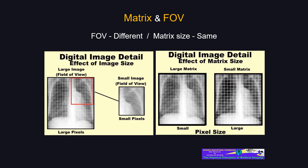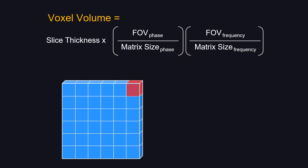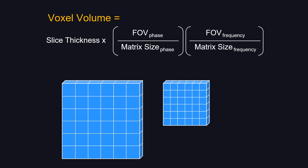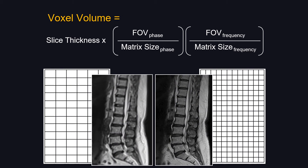This question comes directly from the RSNA module: voxel volume increases with field of view. We don't need a complex formula to understand the relationship between voxel volume, field of view, and matrix size. If you have the same field of view but a smaller matrix size, each voxel will be larger. On the other hand, if you have a larger field of view but the same matrix size, the voxel is also going to be bigger. Both images have the same field of view — the one with the larger matrix size has smaller voxels and therefore much better spatial resolution.